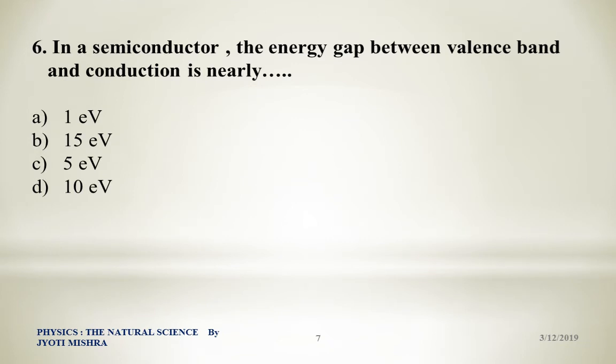The next question: In a semiconductor, the energy gap between the valence band and the conduction band is nearly — Option A: 1 electron volt. Option B: 15 electron volts. Option C: 5 electron volts. Option D: 10 electron volts. The correct answer is Option A: 1 electron volt.